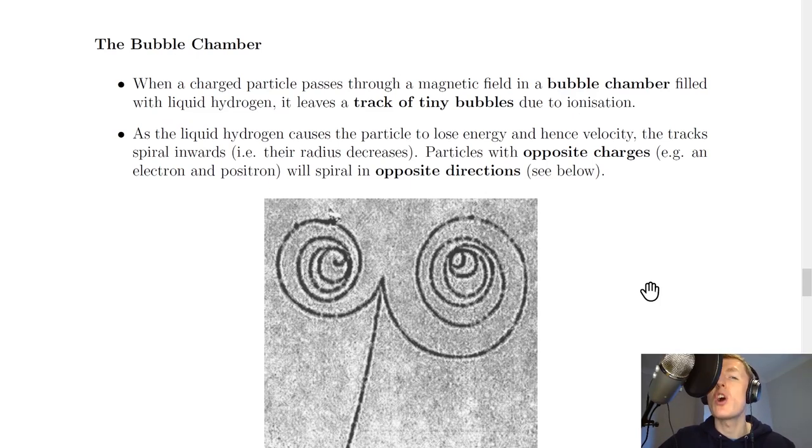Now the bubble chamber is an application of charge moving at an angle to a magnetic field. When a charged particle passes through a magnetic field at an angle in a bubble chamber filled with liquid hydrogen, it leaves a track of tiny bubbles due to ionization.